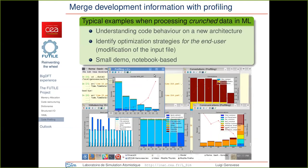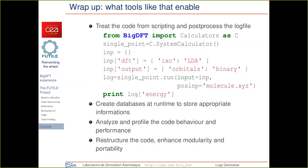It is important to know that one can label timings not only with respect to the routines that originate the performance — as any profiler can do — but also according to the specific label meaning of operations in a particular section of the code. This enables the user to know how much time is spent in, say, preconditioning the wave functions, without focusing on the actual routines behind that category. This is how we exploit the possibility of labeling code sections and storing those labels for the entire existence of the code instance.